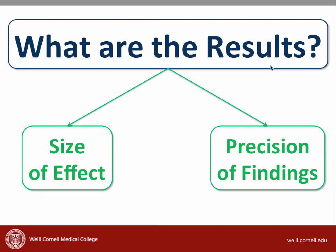Each study has different ways of describing the results. For example, a study comparing a new therapy with a placebo or no therapy uses terms like absolute risk reduction, relative risk reduction, and number needed to treat to describe the treatment effect.